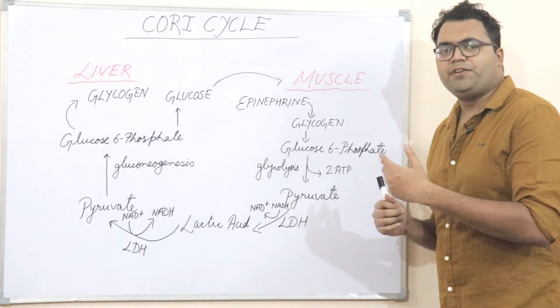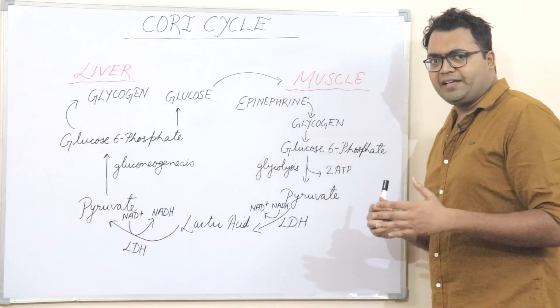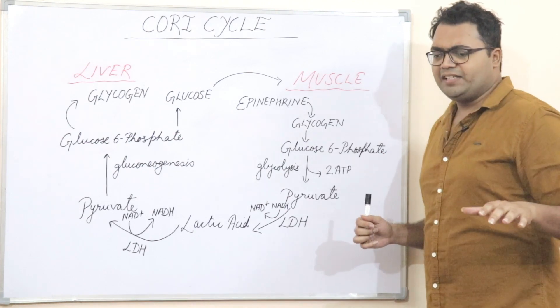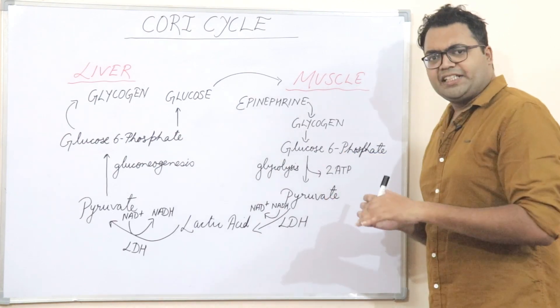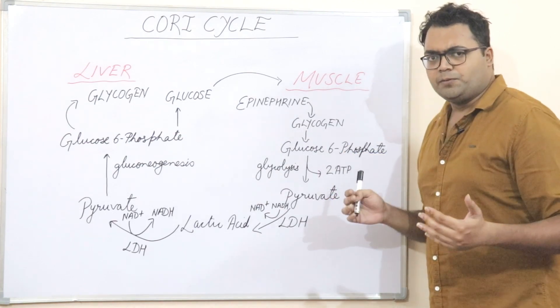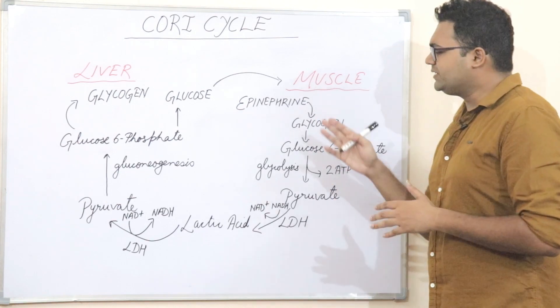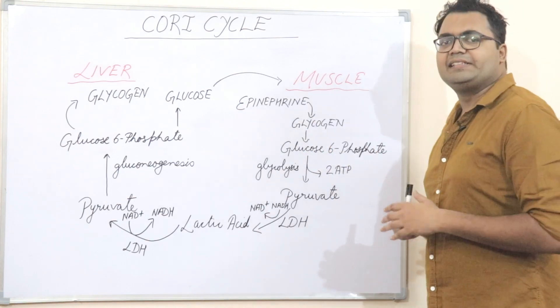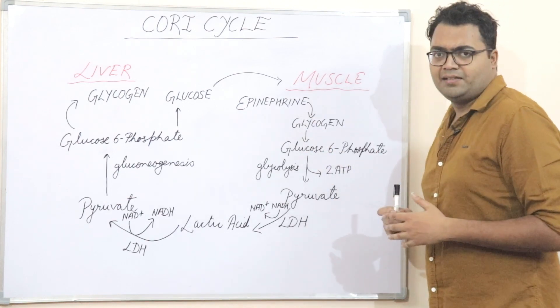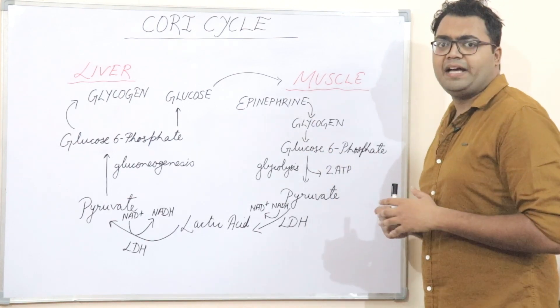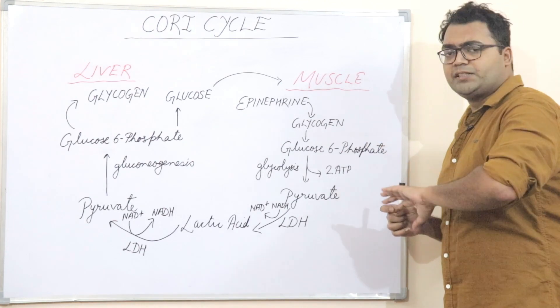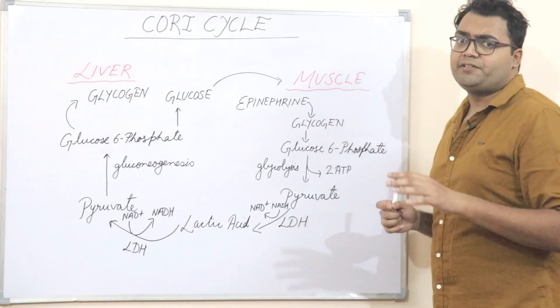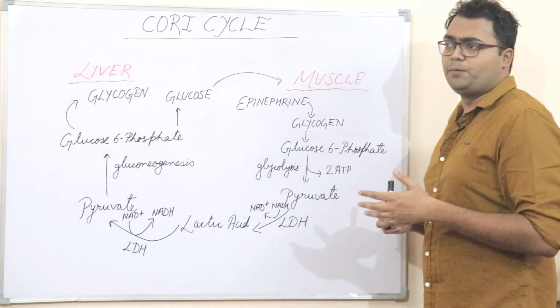First of all, when we are running or gyming — whatever strenuous activity we are trying to do — what happens is the body will release epinephrine, which is also known as adrenaline, which is both a neurotransmitter and a hormone.